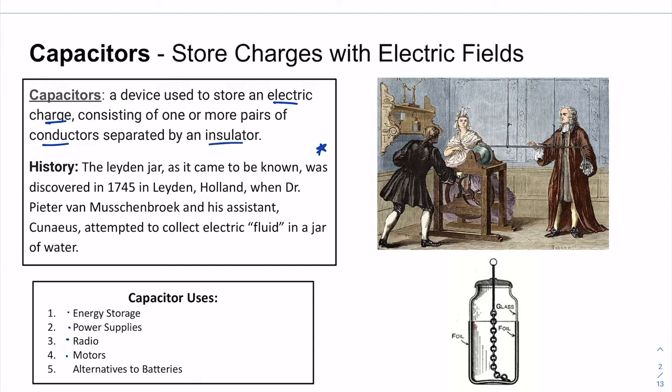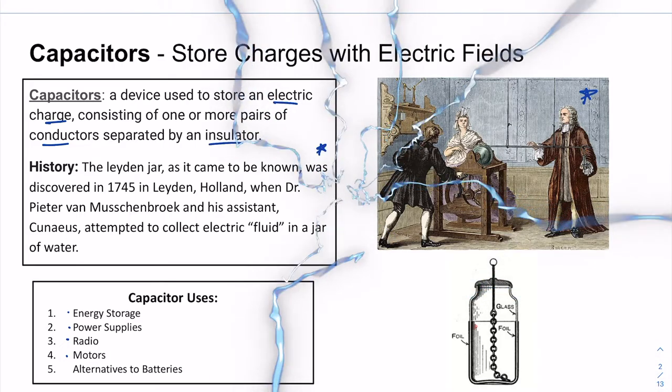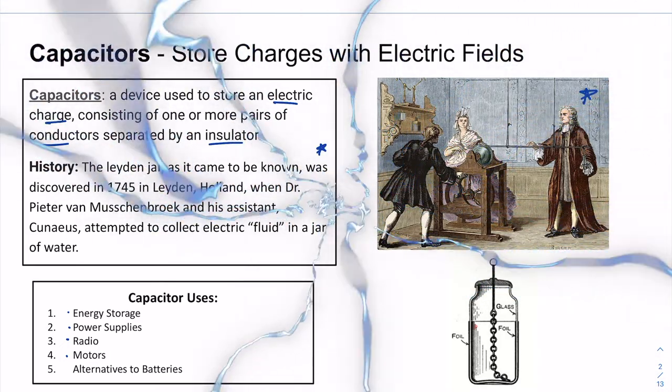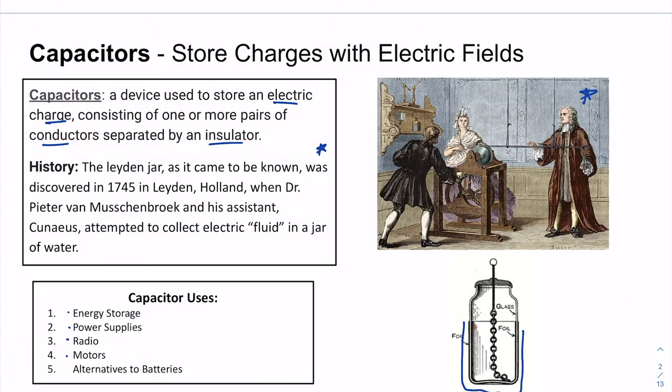We said that in the past, our ancient scientists, well in the 1700s, tried to catch lightning in a bottle, and they tried to catch it in a bottle that had a conductor on the outside and a conductor on the inside, two metal plates separated by an insulator.